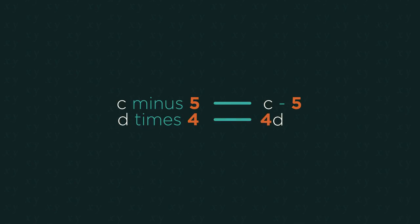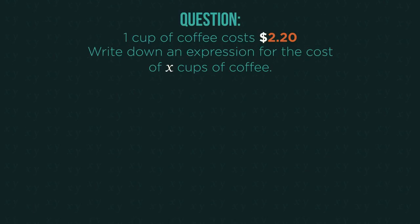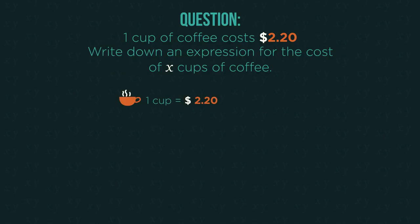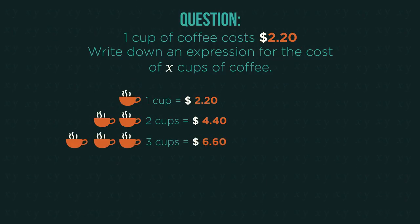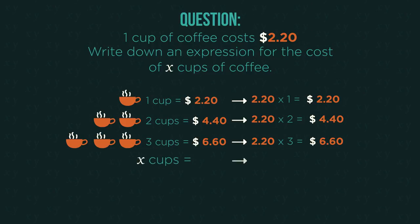We can do much more than this. We can actually turn sentences into algebra to help us solve different problems. If we have this statement: one cup costs $2.20, two cups costs $4.40, three costs $6.60, and so on. Each time, we're multiplying 220 by how many cups we want to buy. So if we wanted to buy X number of cups, we would multiply 220 by X.